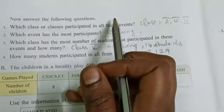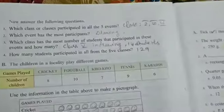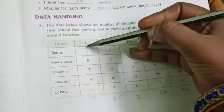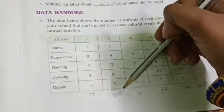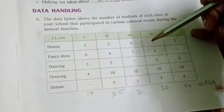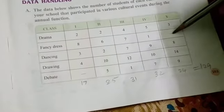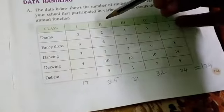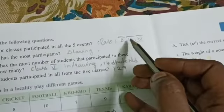Now answer the following question: which class or classes participated in all five events? You will see in first class one event is not participated, but second class every event had students participate. In third class also every student participated. In fourth class also every student participated, but fifth has one event with no participation. So how many classes participated: two, three, four. Second standard, third standard, and fourth class, so you will write Class 2, Class 3, Class 4.